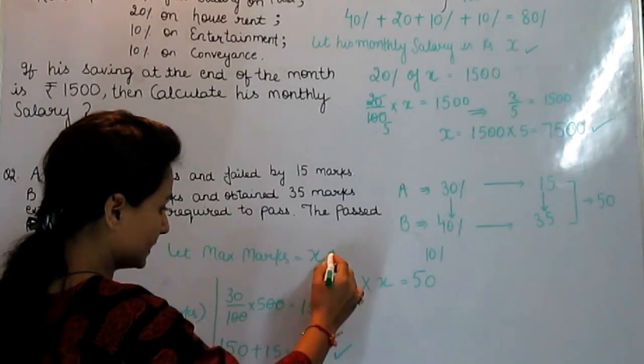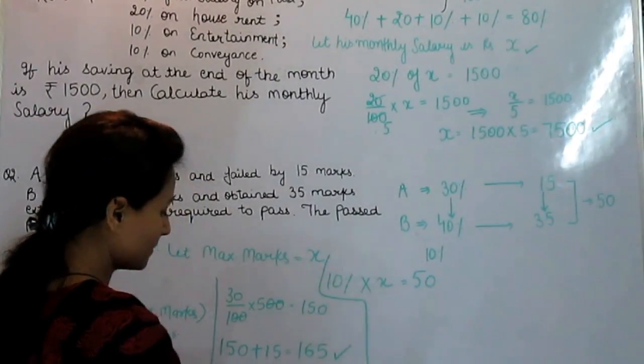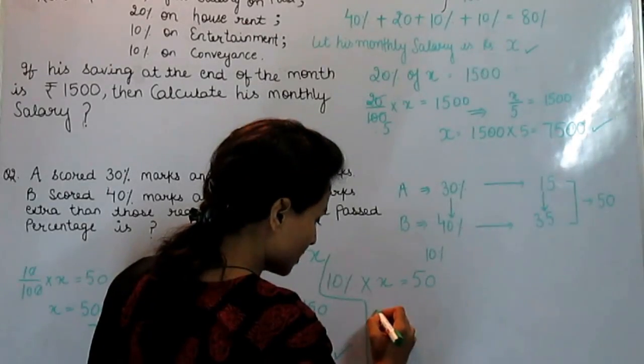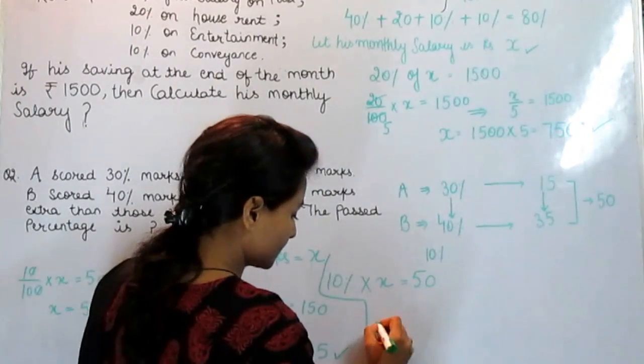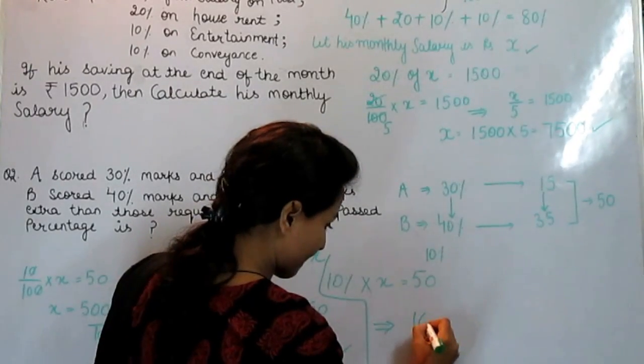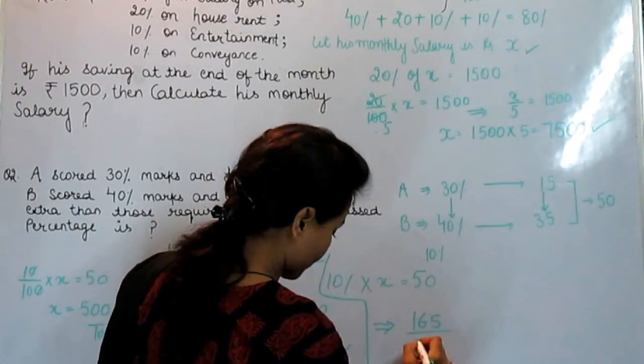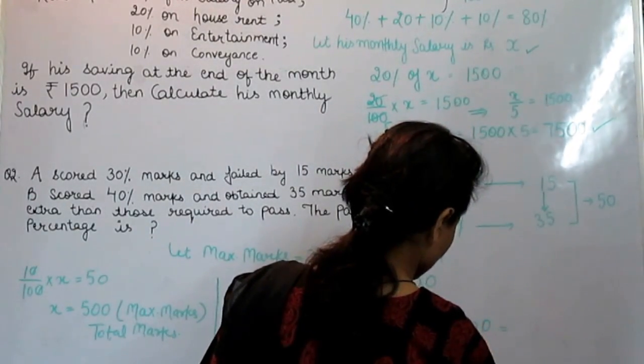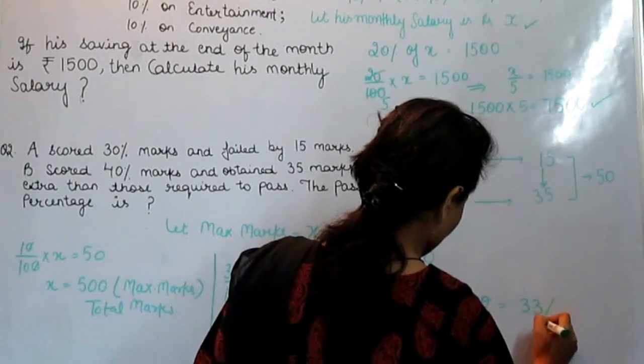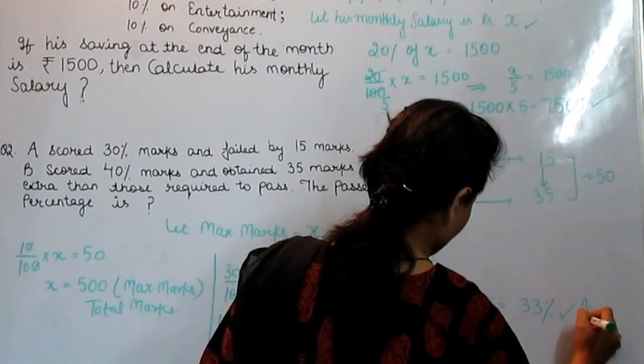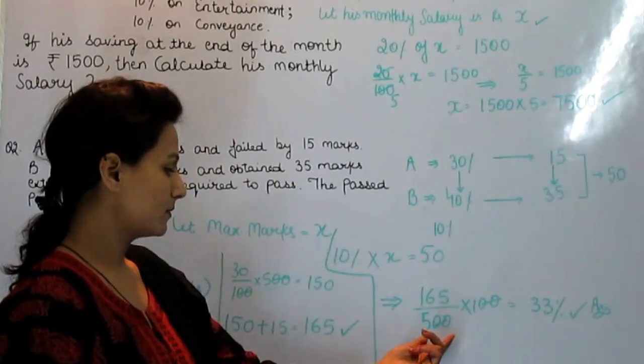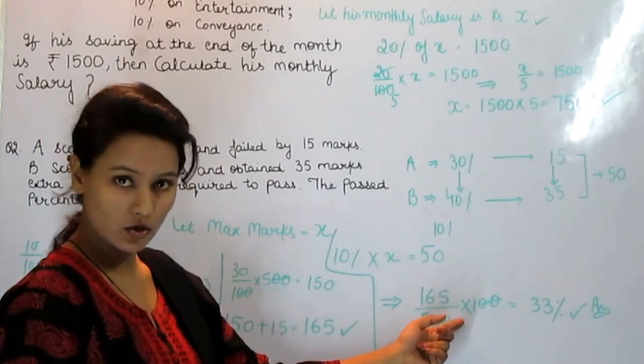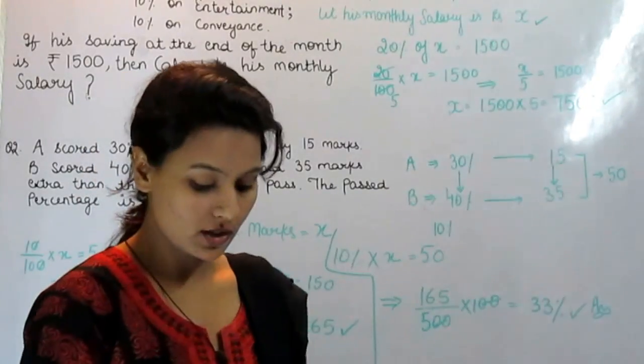And now at the last stage, we need passed percentage. So what is the passed percentage? Out of total, out of 500, passing marks was 165 and the percentage is always calculated on 100. So the percentage is 33. So this is the answer.